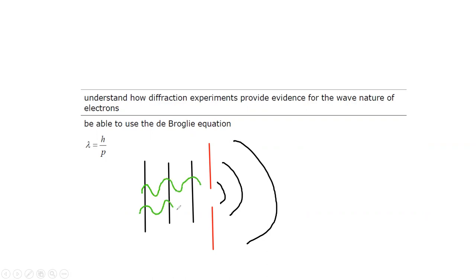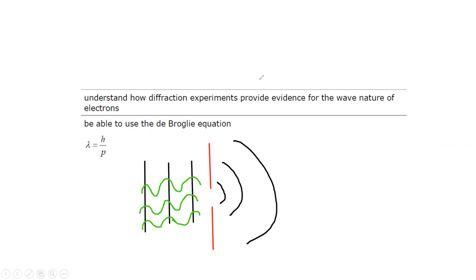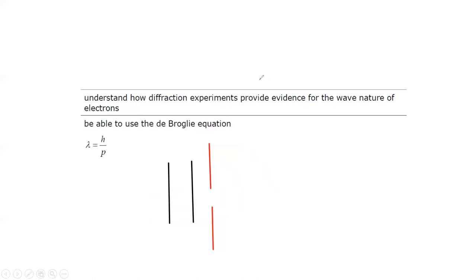Wave fronts are imaginary lines representing identical points on a wave. When waves pass through a gap, the wave fronts spread out — this spreading is called diffraction.